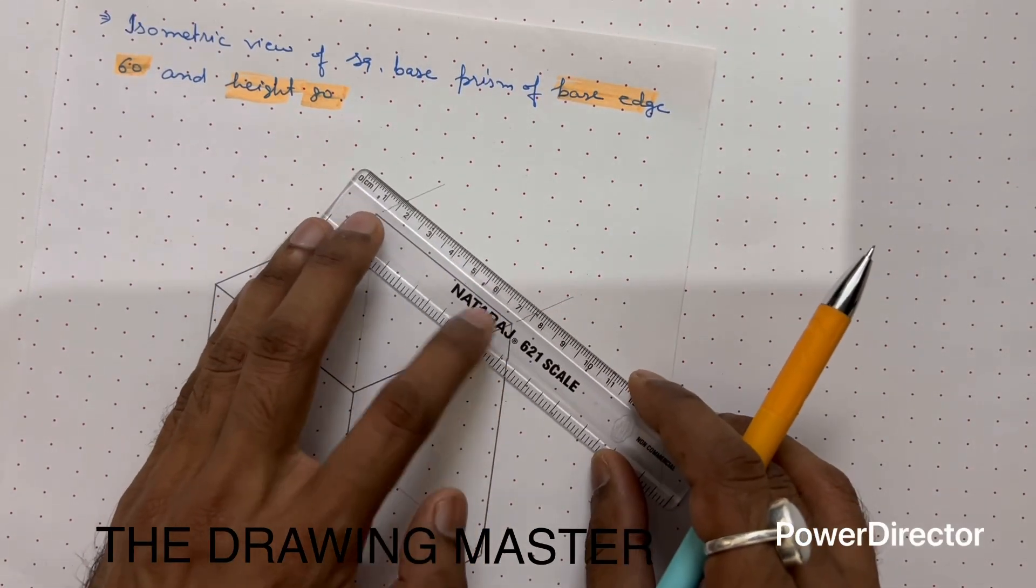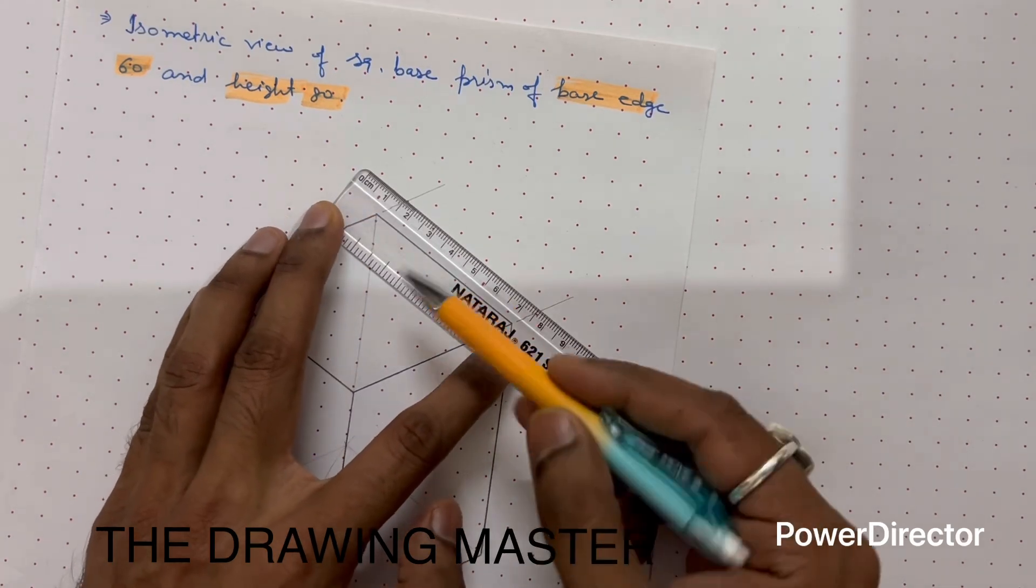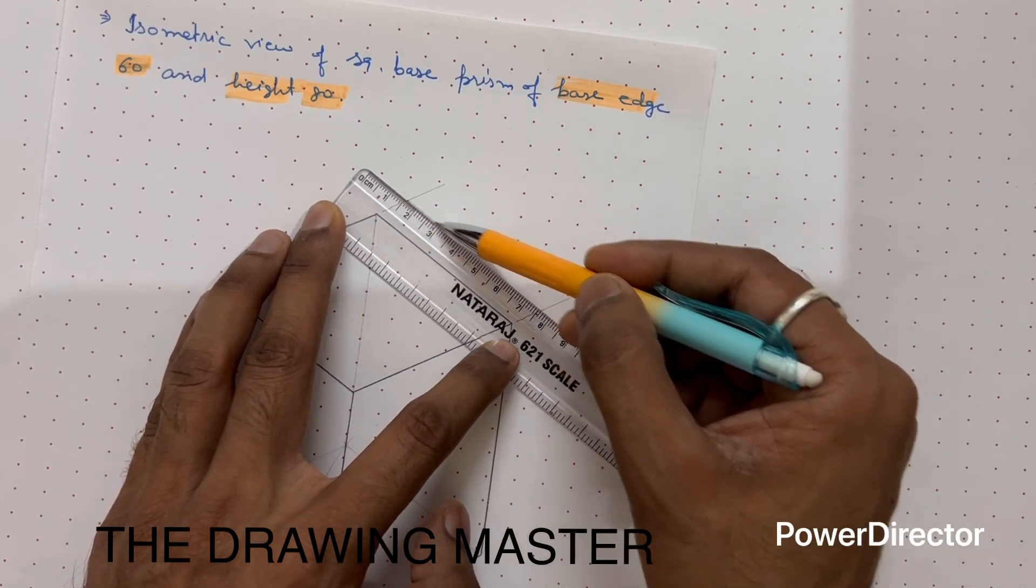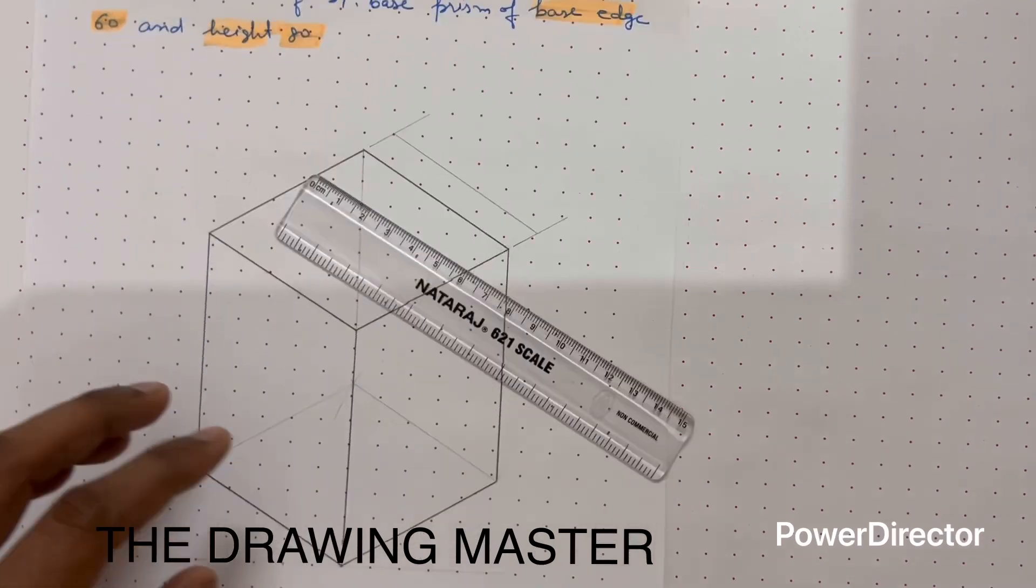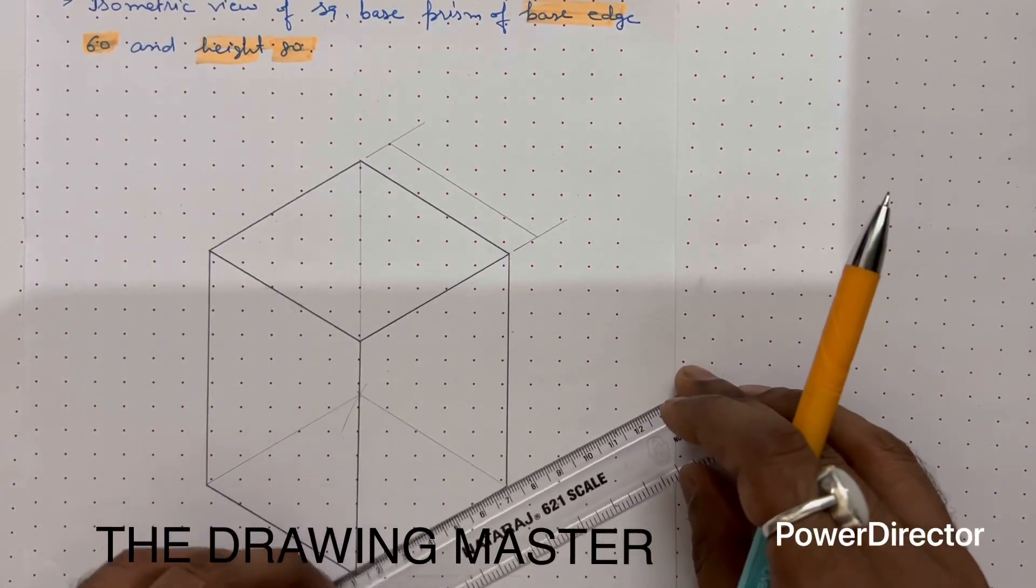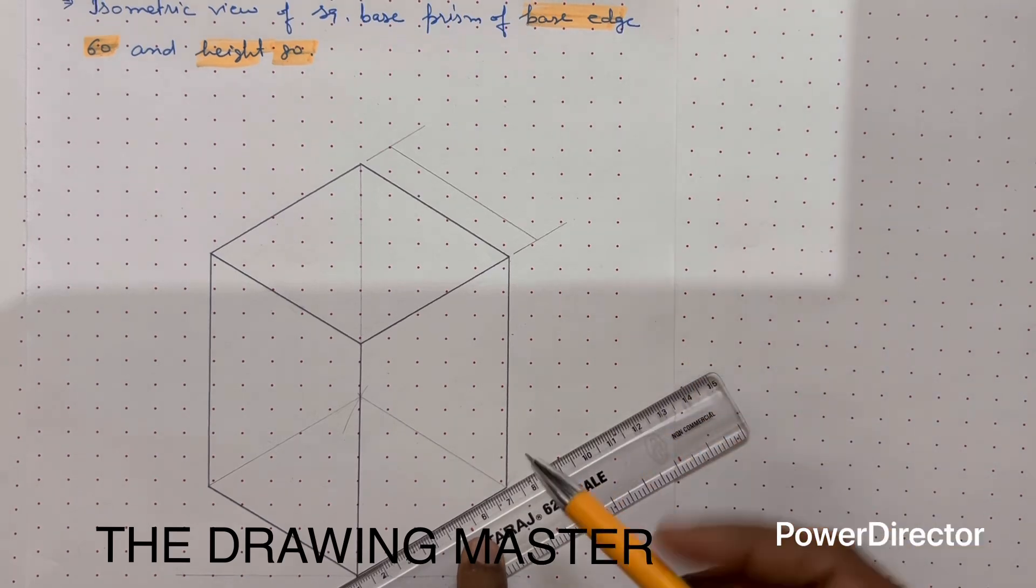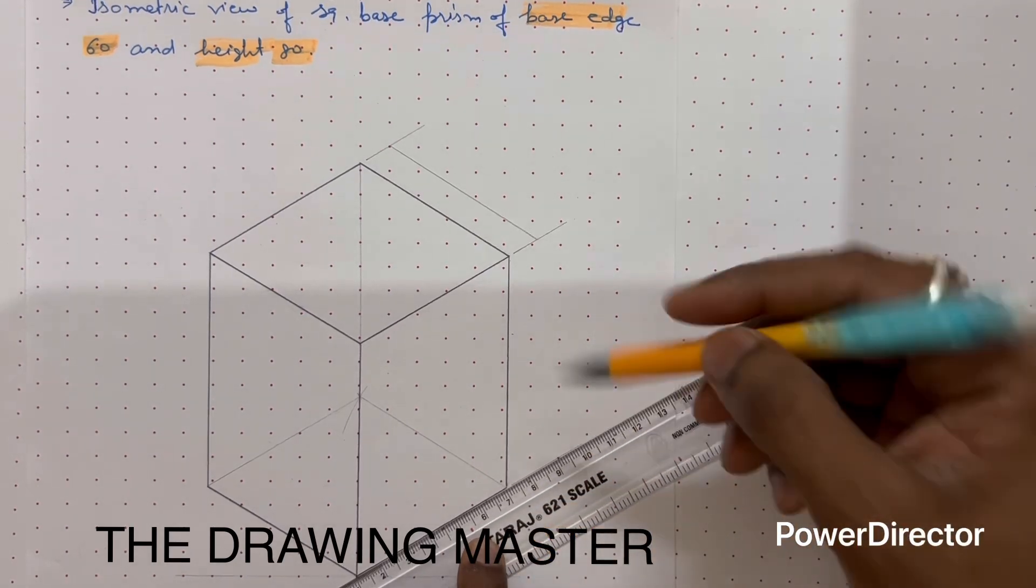Now here you have to mark the dimension line. You can see the scale is parallel to this line. If the scale is parallel to the edge, means the line will be at 30 degrees. Similarly from here, align your scale with this base edge. Now the angle is 30 degrees, take extension line.